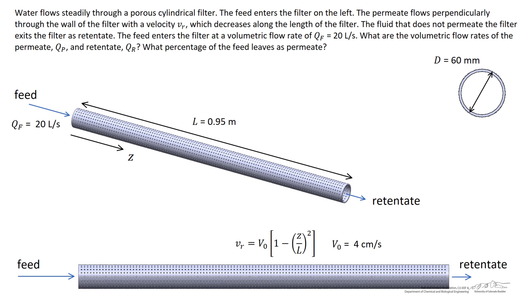Water flows steadily through this porous cylindrical filter. Water enters the filter as feed on the left hand side. Some of the water flows radially outward through the pores in the filter, and the rest of the water exits the filter as retentate.